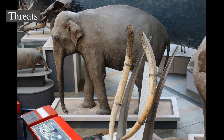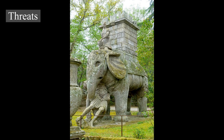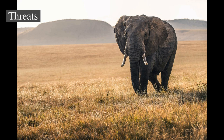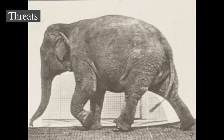Threats: The poaching of elephants for their ivory, meat, and hides has been one of the major threats to their existence. Historically, numerous cultures made ornaments and works of art from elephant ivory. The ivory trade contributed to the African elephant population decline in the late 20th century. This prompted international bans on ivory imports, starting with the United States in June 1989 and followed by bans in other North American countries, Western European countries, and Japan. Around the same time, Kenya destroyed all its ivory stocks. CITES approved an international ban on ivory that went into effect in January 1990. Following the bans, unemployment rose in India and China, where the ivory industry was important economically.